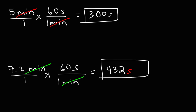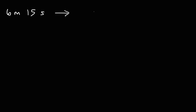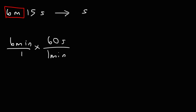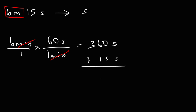So now you know how to convert from minutes to seconds. Now let's say if you're given 6 minutes and 15 seconds — how do you convert that to seconds? What you want to do first is convert the 6 minutes portion into seconds. We know there are 60 seconds in 1 minute, so it's 6 times 60, which is 360 seconds. To find 6 minutes and 15 seconds, all we need to do is add an additional 15 seconds.